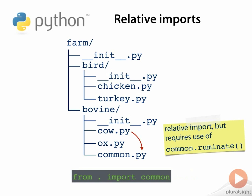You can also use just dots with no module in the `from` section of a relative import. In this case, the dots are still interpreted in exactly the same way, and the import section must specify a module name. So going back to our example where we import `ruminate` into cow.py, you could instead use this form, in which case the `ruminate` function would need to be qualified with `common` when you call it.